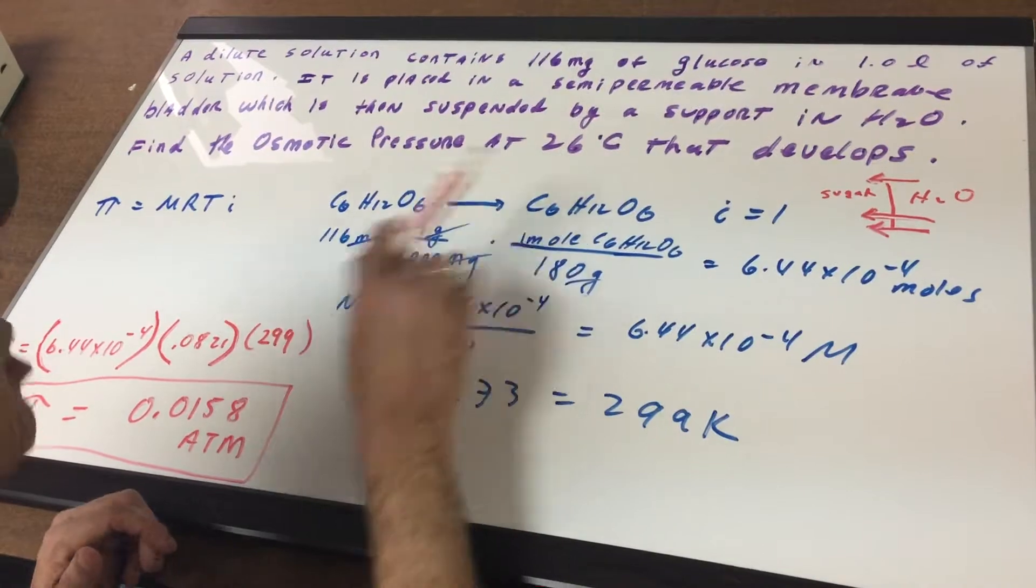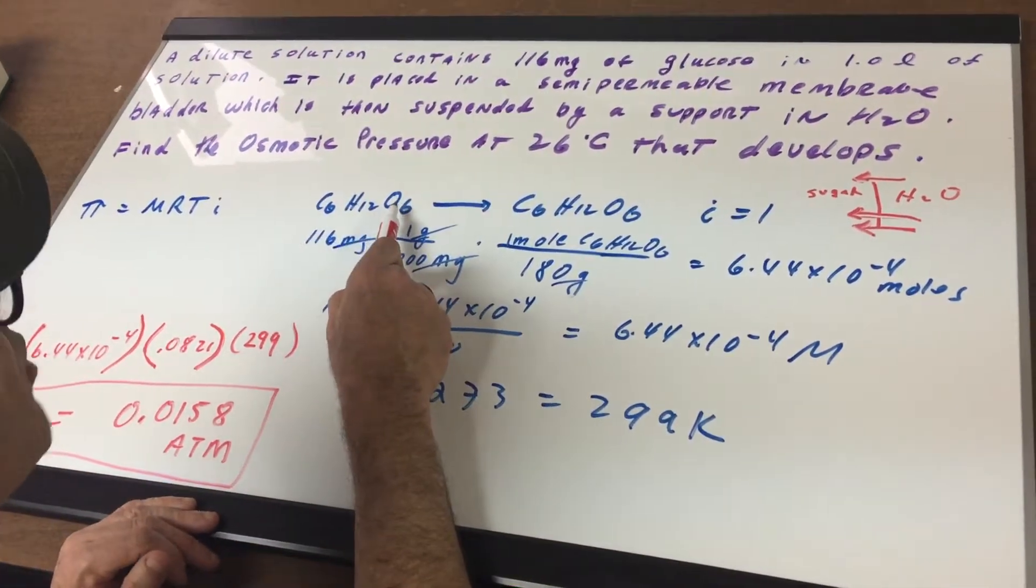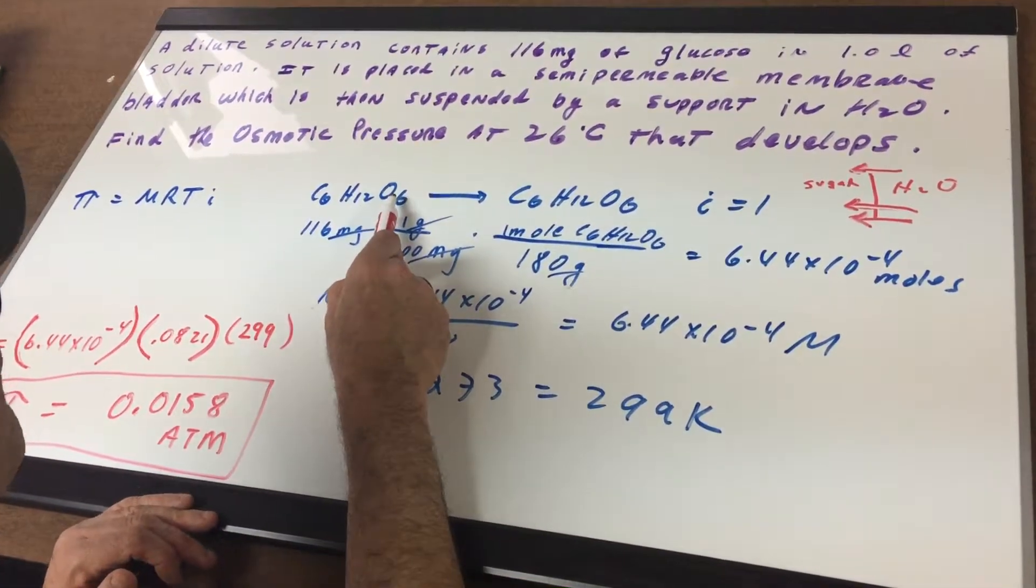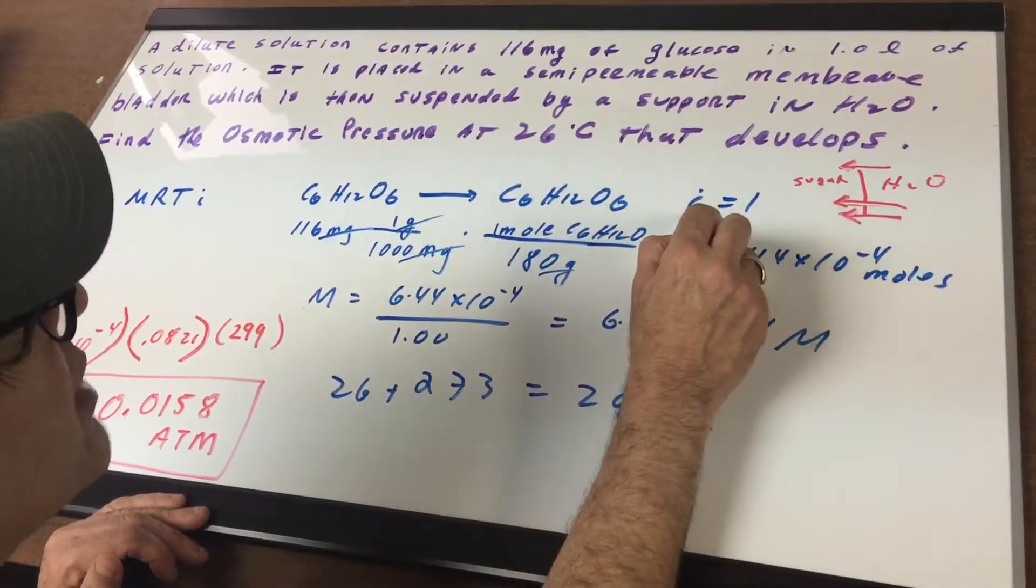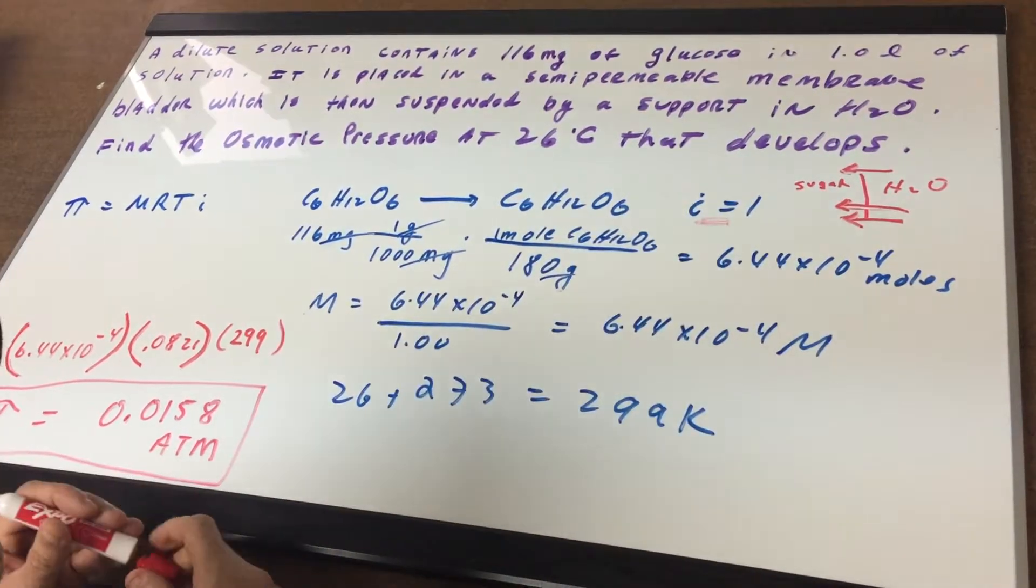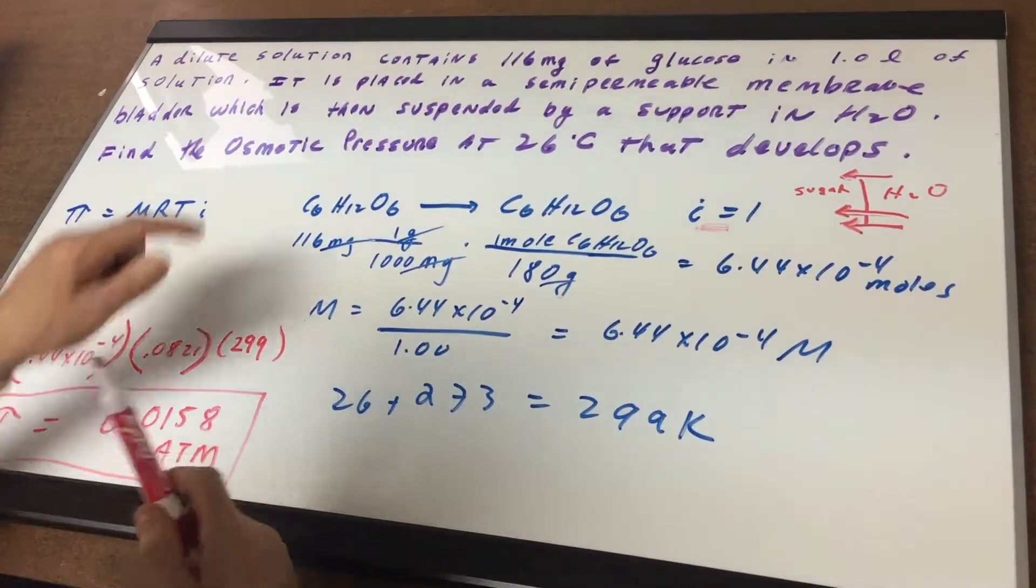Let's go off to the side and do our work. C6H12O6 is the molecular formula for glucose and it does not break up. So this is a non-electrolyte, so i is equal to 1. Well, that's easy enough.